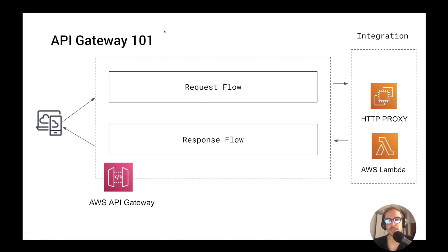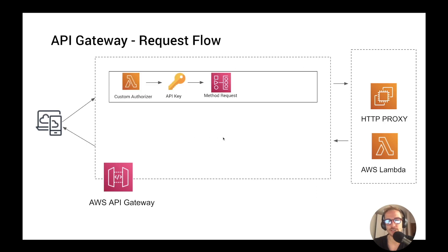Hi there. I want to make a quick video on how to validate requests using API Gateway. Let's recap for a second what we have seen so far. In the previous video, I showed how the request flow is composed with request flow integration and response flow, and how to use custom authorizer and API key to create usage plans. If you are interested in those videos, I'm going to link it in the description.